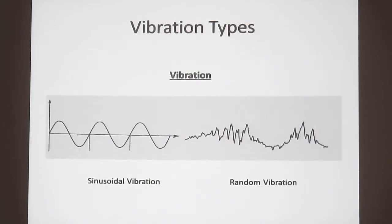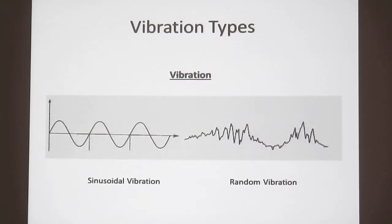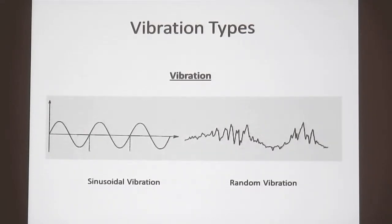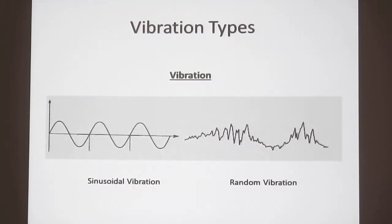On the left is sinusoidal vibration, which is the standard classical sinusoidal waveform, repeating in time and in amplitude. Random vibration, as one can see, is irregular and non-repeating, and can have many different shapes dependent upon the vehicle, the road surface, et cetera.